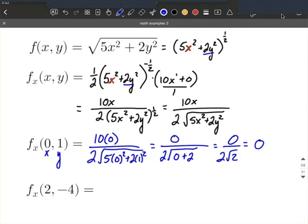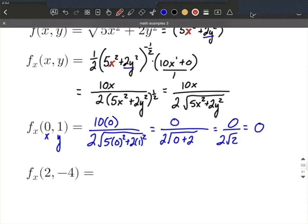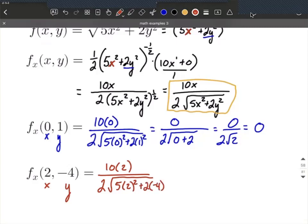Next, let's look at the case where we're plugging in more complicated numbers. We go back to our partial derivative. Wherever we see an x, it gets replaced with 2, and wherever we see a y, it gets replaced with -4. We have 10(2) over 2 times the square root of 5(2)² + 2(-4)².